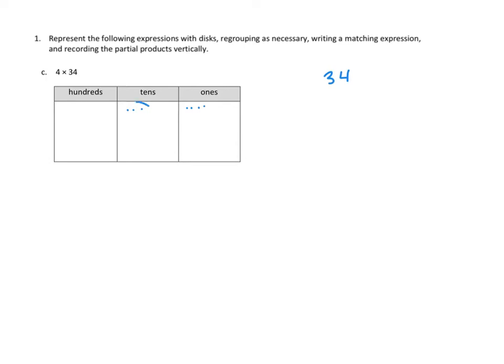In our place value chart, it's fairly simple. We're going to make 4 packages of everything we had. So we had 3 tens — now we have 4 sets of 3 tens. We had 4 ones — now we're going to make 4 sets of 4 ones. And over here on the side, we're going to multiply 34 times 4. So what do we get when we multiply these 4 ones times 4?